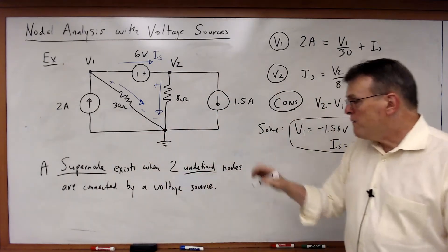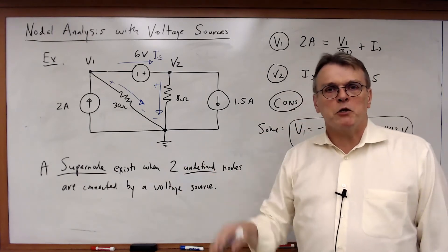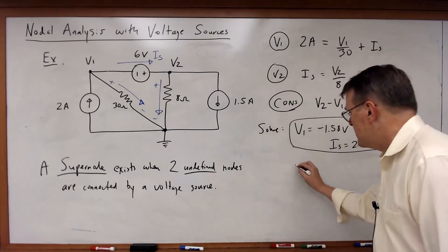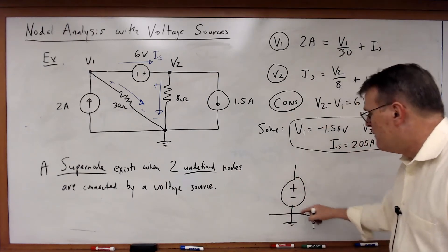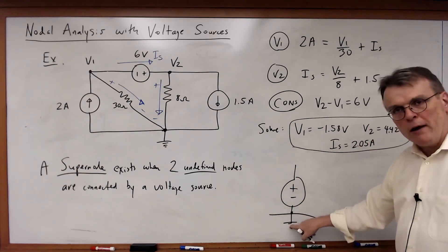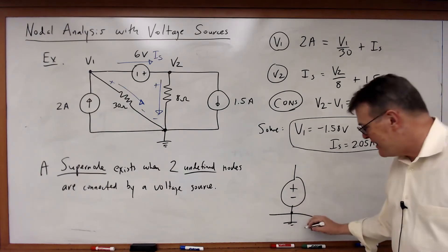So when two undefined, and this is essential, when two undefined nodes are connected by a voltage source, we have a supernode. I want to emphasize, if you have one end of a voltage source connected to ground, that is not a supernode because that node is known.